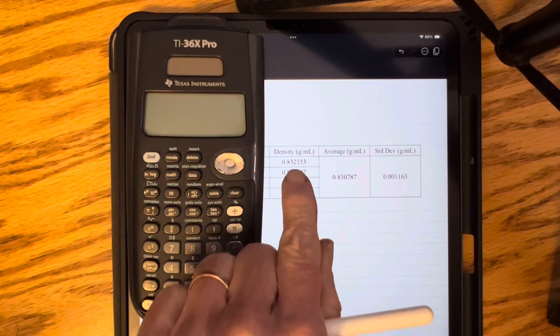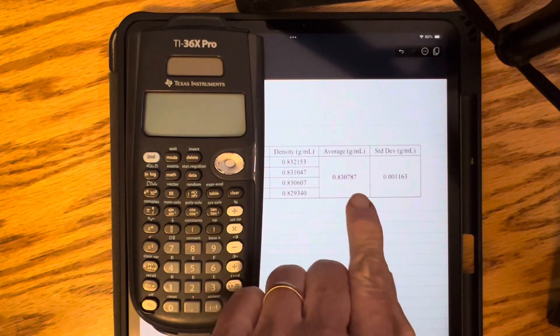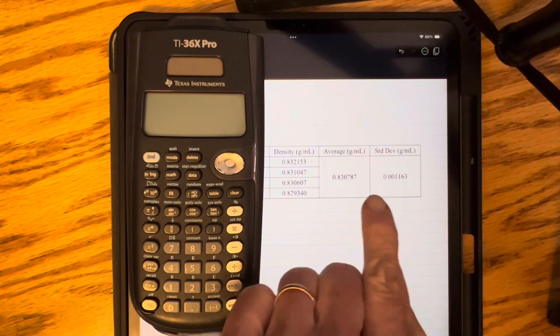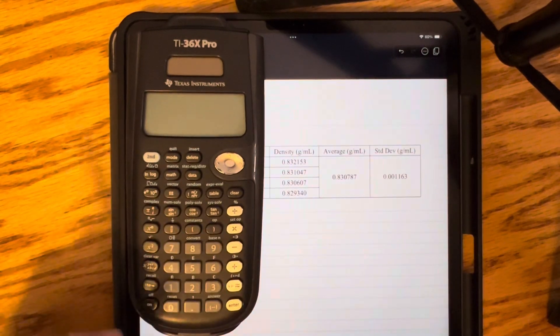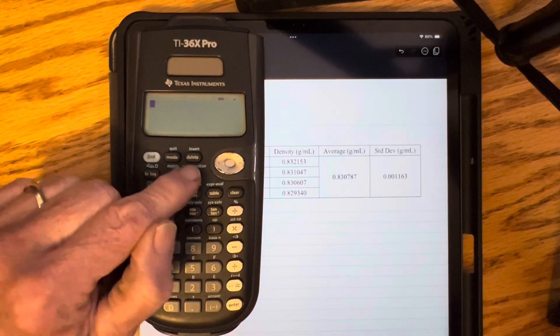So we are going to be finding the average of these densities. It's already been calculated here, but I'm going to show you how it works on the calculator. So we turn the calculator on, and then we press the Data button.